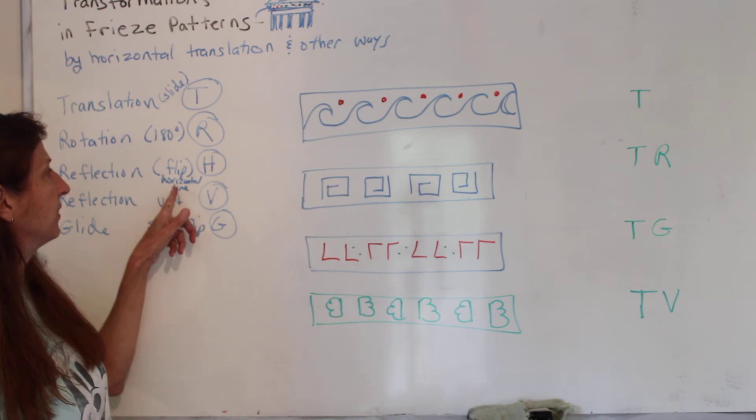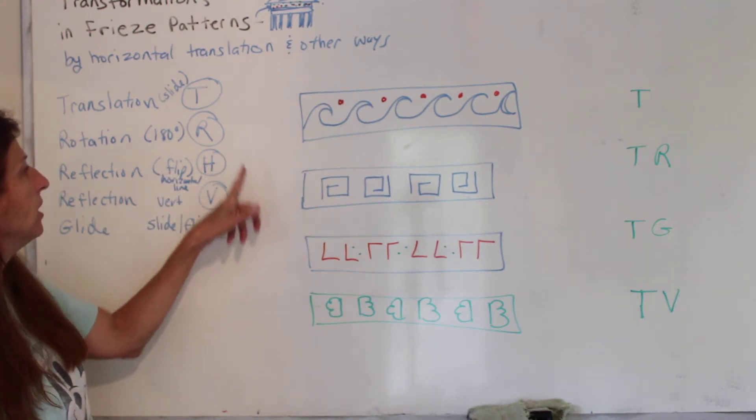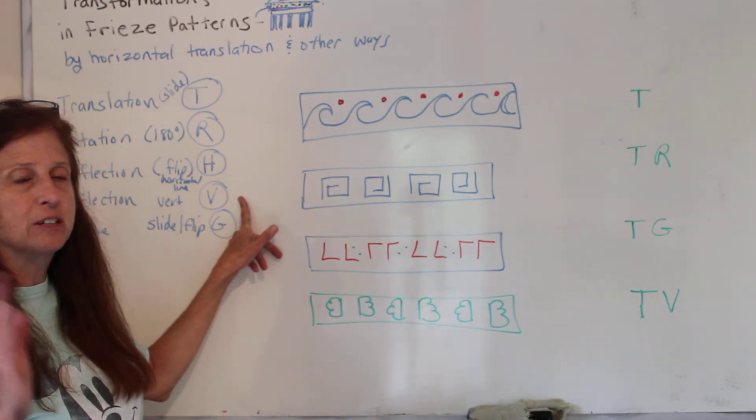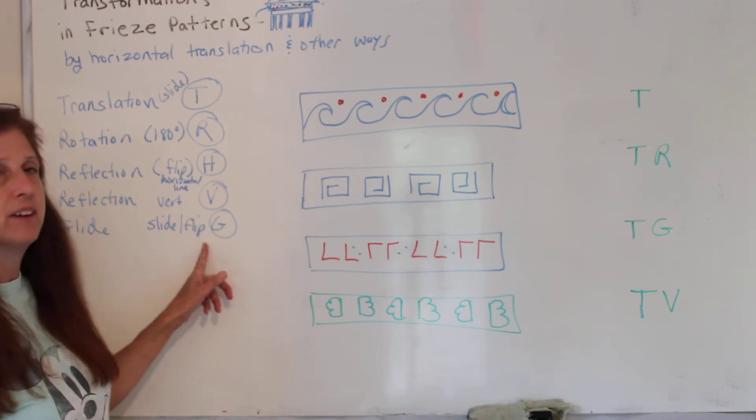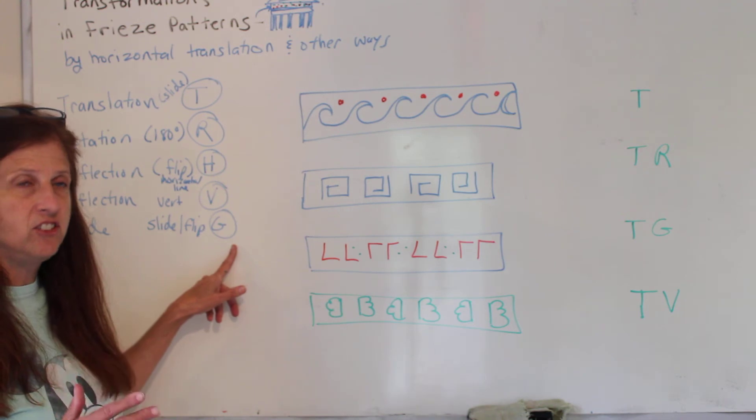A reflection, remember, is a flip. But you can either flip over something horizontal or vertical. So H is if you're flipping over something horizontal. V is if you're flipping over something vertical. And a glide, remember, is a slide then a flip, or a flip then a slide. And its abbreviation is G.